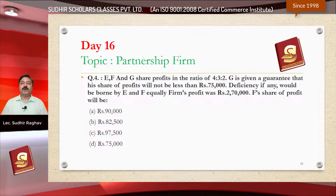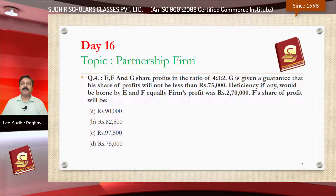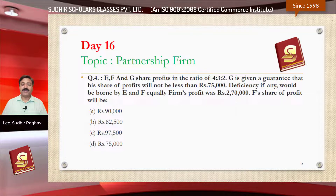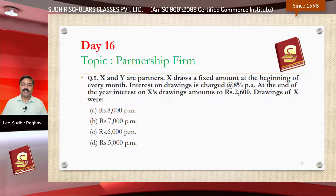Question number four: E, F, and G share profits in the ratio of 4:3:2. G is given a guarantee that his share of profit will not be less than rupees 75,000. Deficiency, if any, would be borne by E and F equally. Firm's profit was rupees 70,000. F's share of profit will be — option A rupees 90,000, option B rupees 82,500, option C rupees 97,500, or option D rupees 75,000.